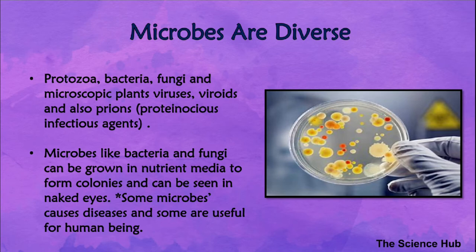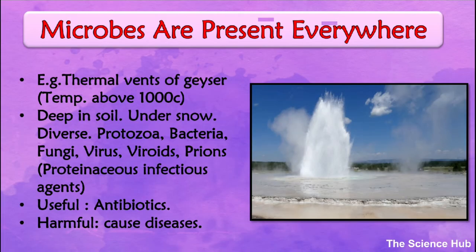Bacteria and fungi can be grown on nutritive media to form colonies which can be seen by the naked eye, and are very useful in the study of microorganisms. Microbes can cause diseases in human beings, plants, and animals. Several microorganisms are useful to humans in diverse ways. They are found everywhere on Earth, ranging from soil, air, and water.